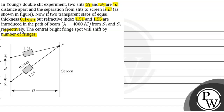We have two slabs inserted in front of H1 and H2 with the same thickness. The thickness of both slabs is given as 0.1 mm, which equals 0.1 × 10⁻³ meter. The refractive index of slab 1 is 1.51 and of slab 2 is 1.55.